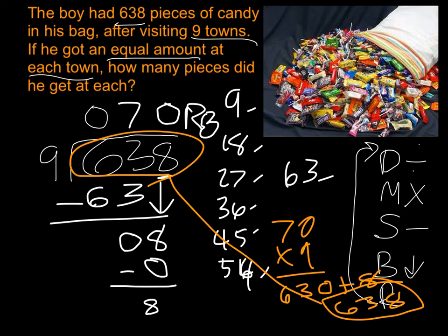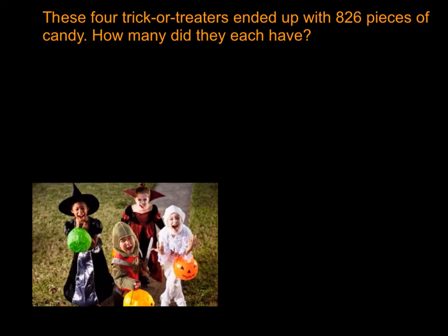Just remember that any remainder after you're done subtracting can never be bigger than your divisor. Now let's move on to our next example. It says these four trick-or-treaters ended up with 826 pieces of candy. How many did they each have? This is assuming they all have equal amounts, so solve that and then we'll solve it together.